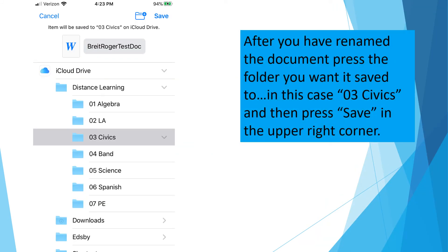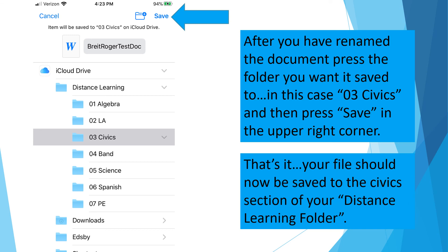After you have renamed the document, press the folder you want it saved to — in this case, 03 Civics — and then press Save in the upper right corner. That's it. Your file should now be saved to the Civics section of your Distance Learning folder.